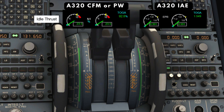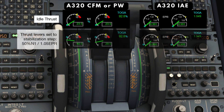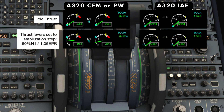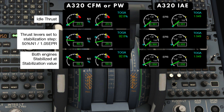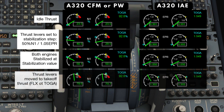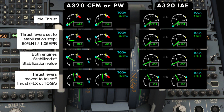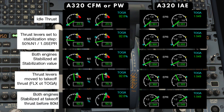Firstly, here it shows the engine display when the thrust levers are at idle. Then the thrust levers are set to the stabilization step, that is 50% N1 or 1.05 EPR. When both engines are stabilized at the stabilization value, the thrust levers are then moved to the takeoff thrust. Before 80 knots, both engines are stabilized at the takeoff thrust. Now let's see the application of it.